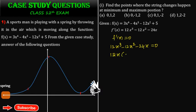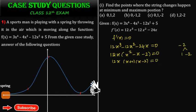Taking 12x common, the remaining expression is x² - x - 2 = 0. Factoring: 12x(x + 1)(x - 2) = 0. Therefore x = 0, x = -1, and x = 2. These are the three critical points where the string changes position.